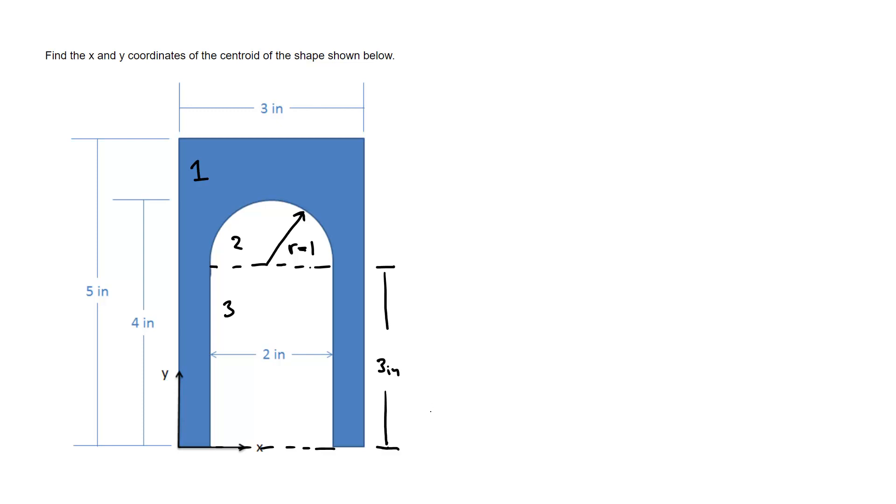With that we're going to start to create our table. For a centroid table we're going to need a few things: the shape we're working with, the area of each of those shapes, and then the x coordinate and y coordinate of the centroid of each of those shapes.